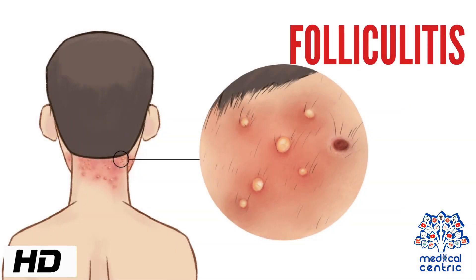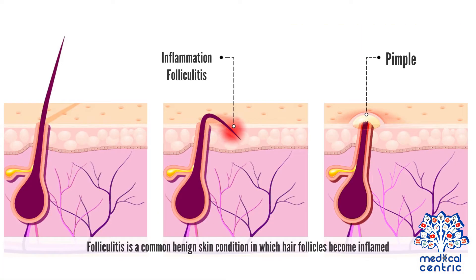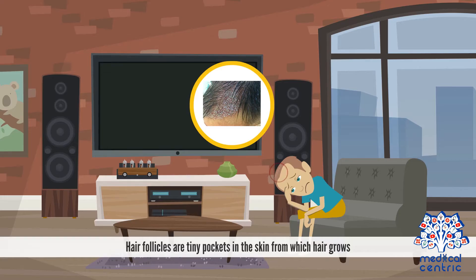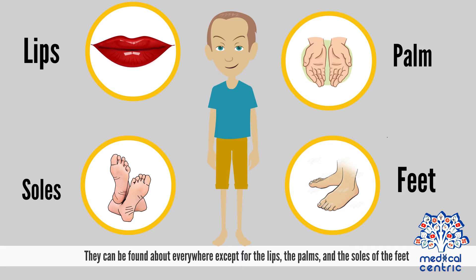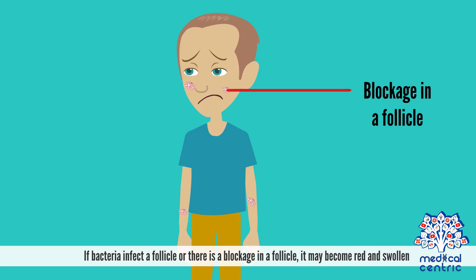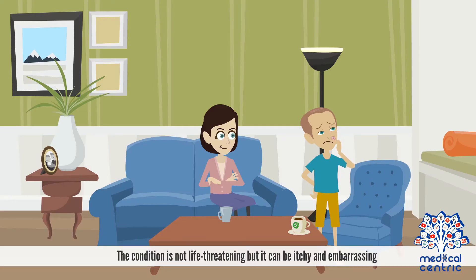Today's topic is folliculitis. Folliculitis is a common benign skin condition in which hair follicles become inflamed. Hair follicles are tiny pockets in the skin from which hair grows. They can be found just about everywhere except for the lips, the palms, and the soles of the feet. If bacteria infect a follicle or there is a blockage in a follicle, it may become red and swollen. The condition is not life-threatening, but it can be itchy and embarrassing.